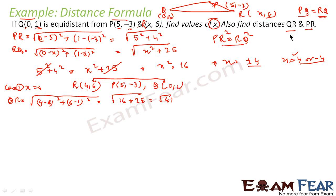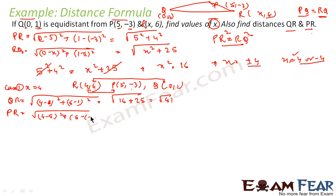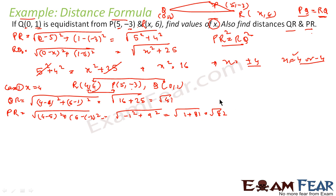Now we find PR. P is (5,-3) and R is (4,6), so PR equals root of (4-5)² + (6-(-3))², which is root of (-1)² + 9², giving root of 1 + 81, which is root of 82. So for Case 1, QR = √41 and PR = √82.